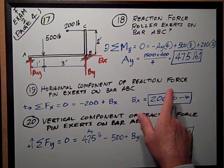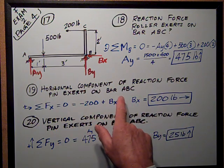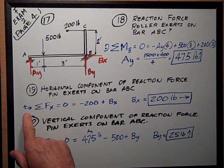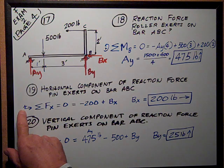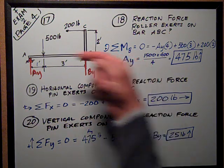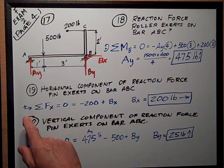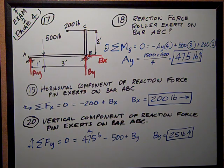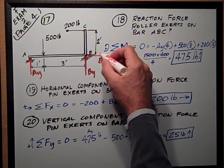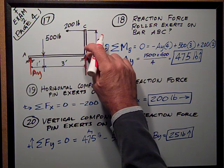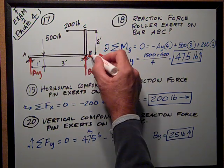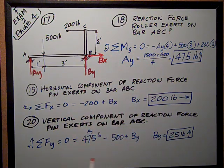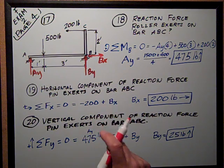Number 19, the horizontal component of the reaction force the pin exerts on bar ABC. The pin was at B. So I need to sum forces in the X direction. I assume positive to the right. That's negative 200 applied force, which is negative because it's going to the left, the opposite of my positive sign assumption, plus BX. And I see there where I have assumed it, written it down as the other direction. So BX I've assumed for my calculation as positive to the right as the force it exerts on the bar.